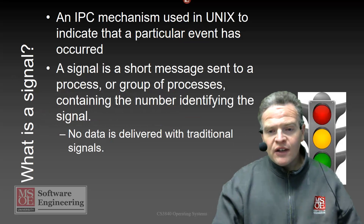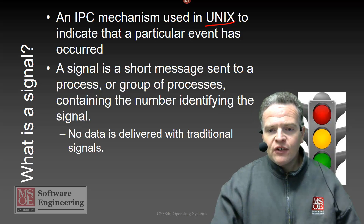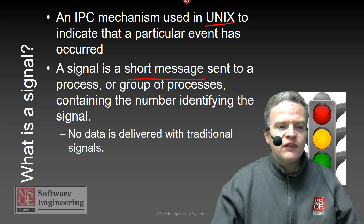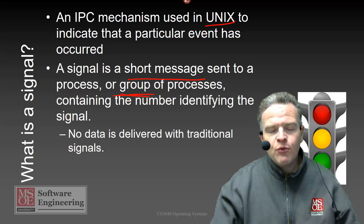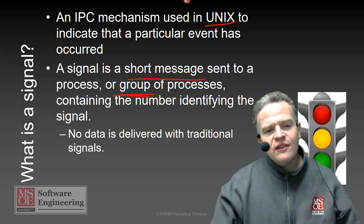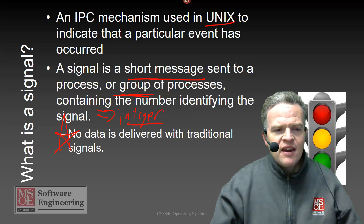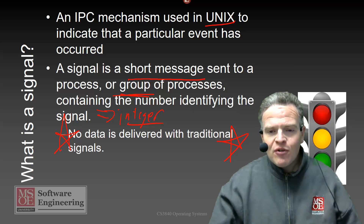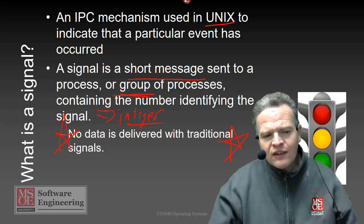A signal is an interprocess communication mechanism used in UNIX for very rudimentary interprocess communications. A signal itself is really a short message that is sent to a process or a group of processes, that really just contains a number identifying the signal — essentially an integer. We do not have any data delivered as with a traditional message; it's just basically the number indicating that the signal has occurred.